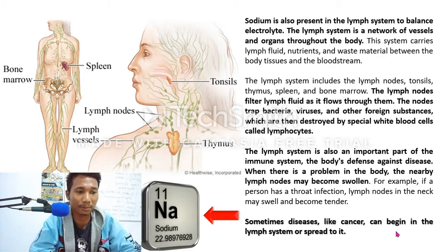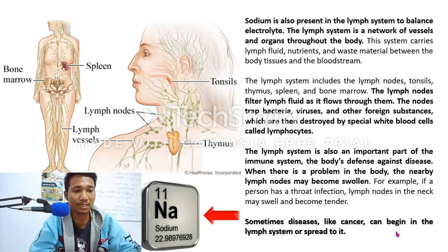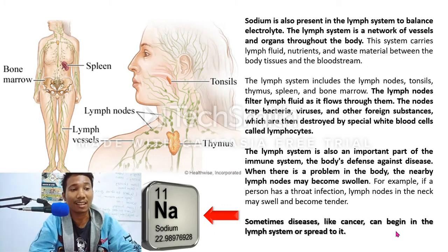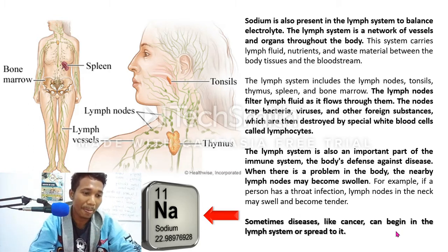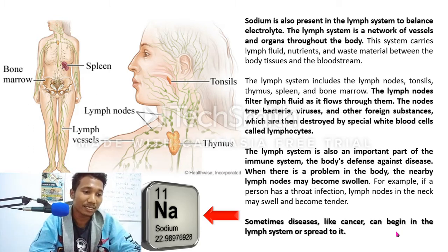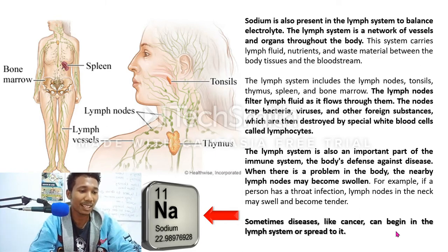The lymph nodes filter the lymph fluid as it flows through them. For example, the lymph nodes trap bacteria, viruses, and other foreign substances, which are then destroyed by special white blood cells called lymphocytes. The lymph system is also an important part of the immune system — the body's defense against disease.